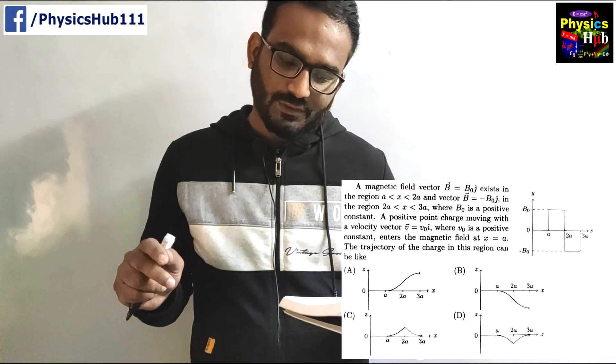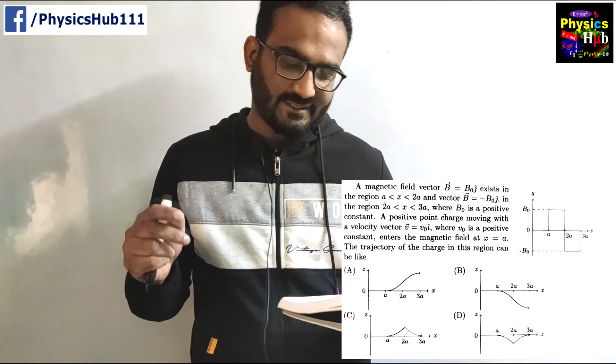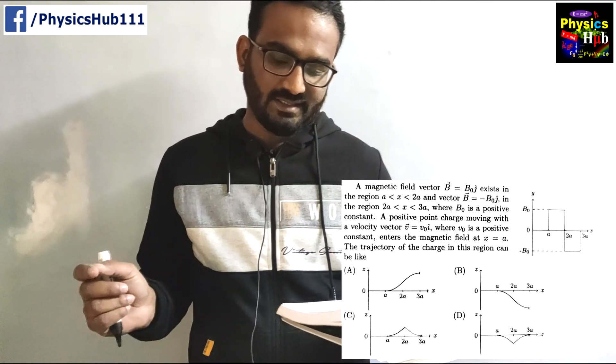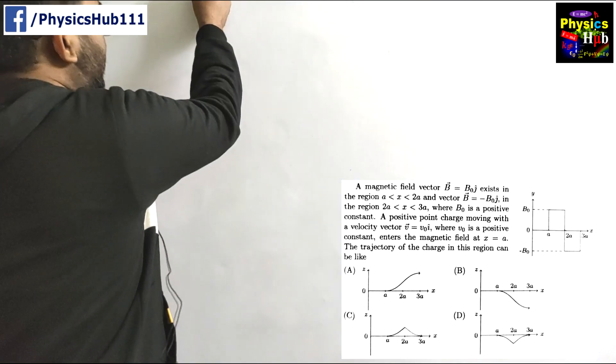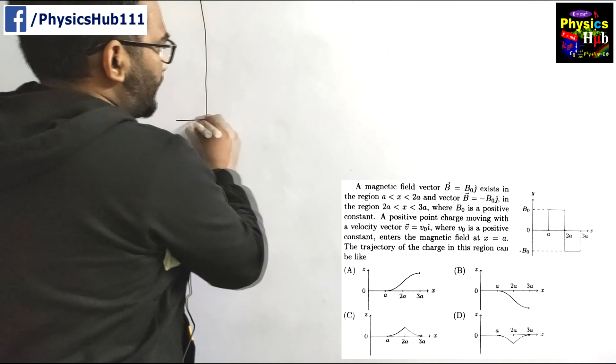A magnetic field vector B equals B naught j cap exists in the region a less than x less than 2a. Let me just first draw the given situation then it will be better for you to understand.